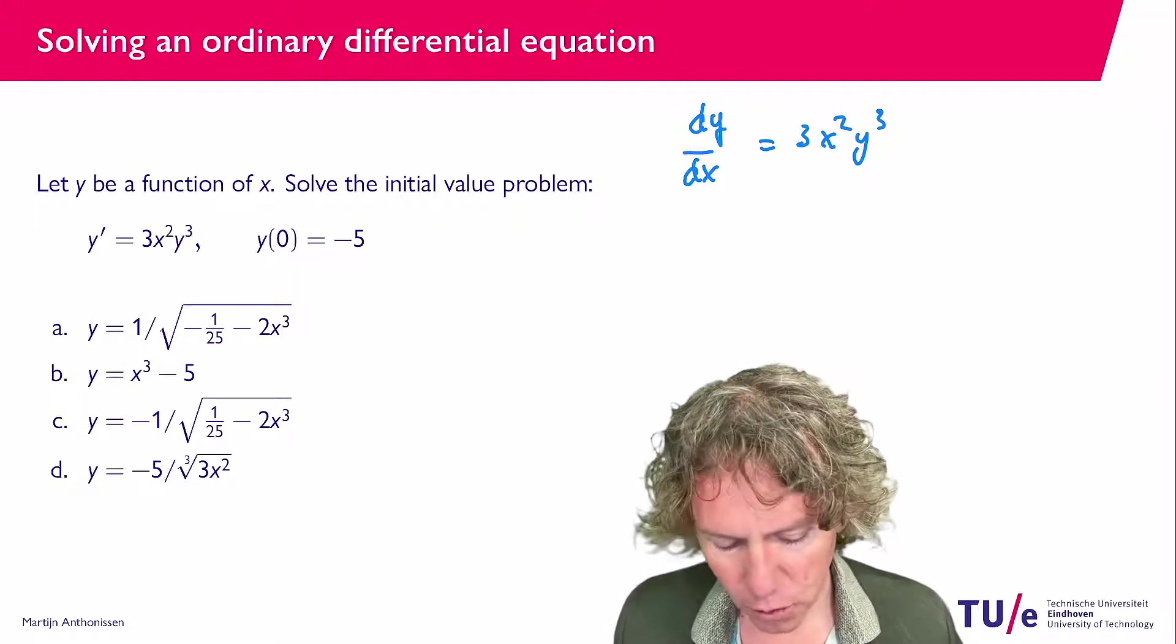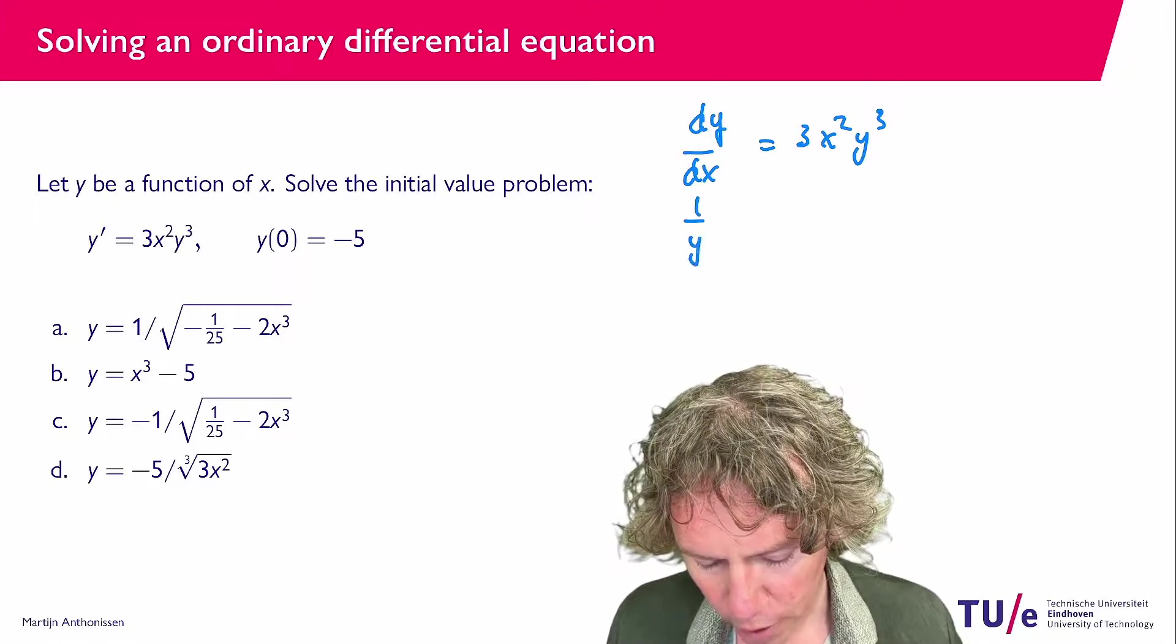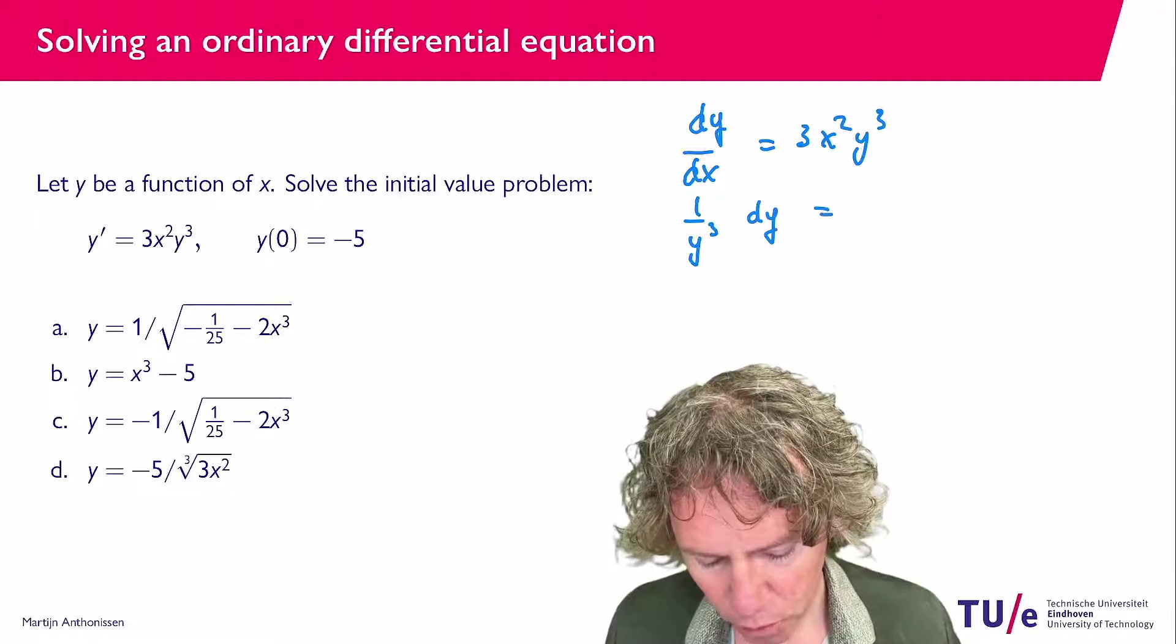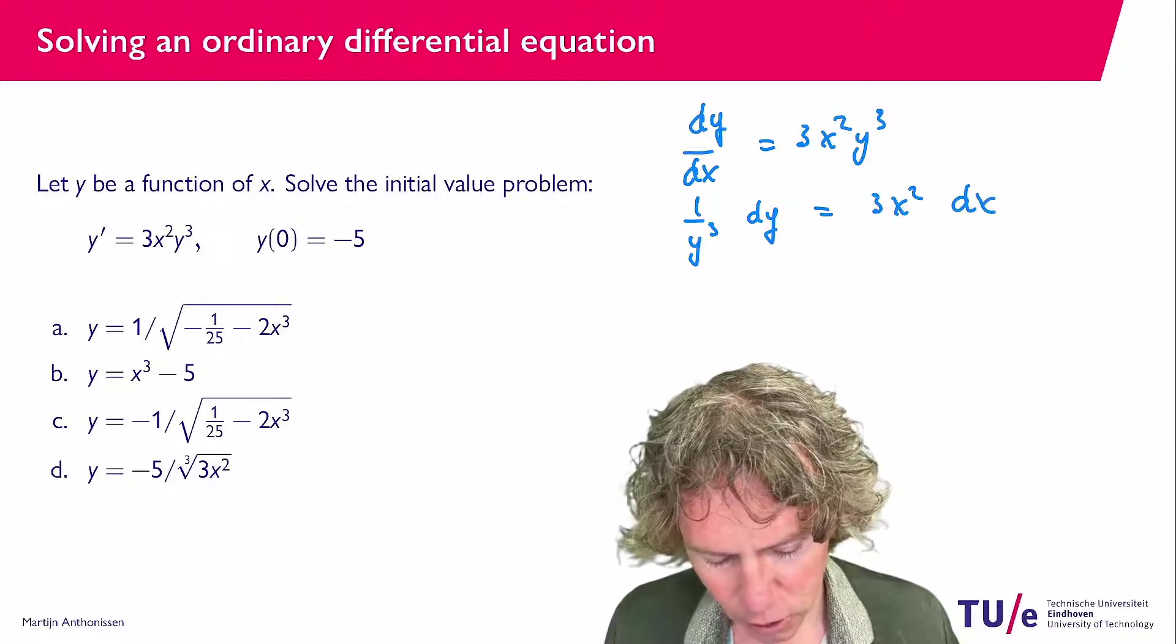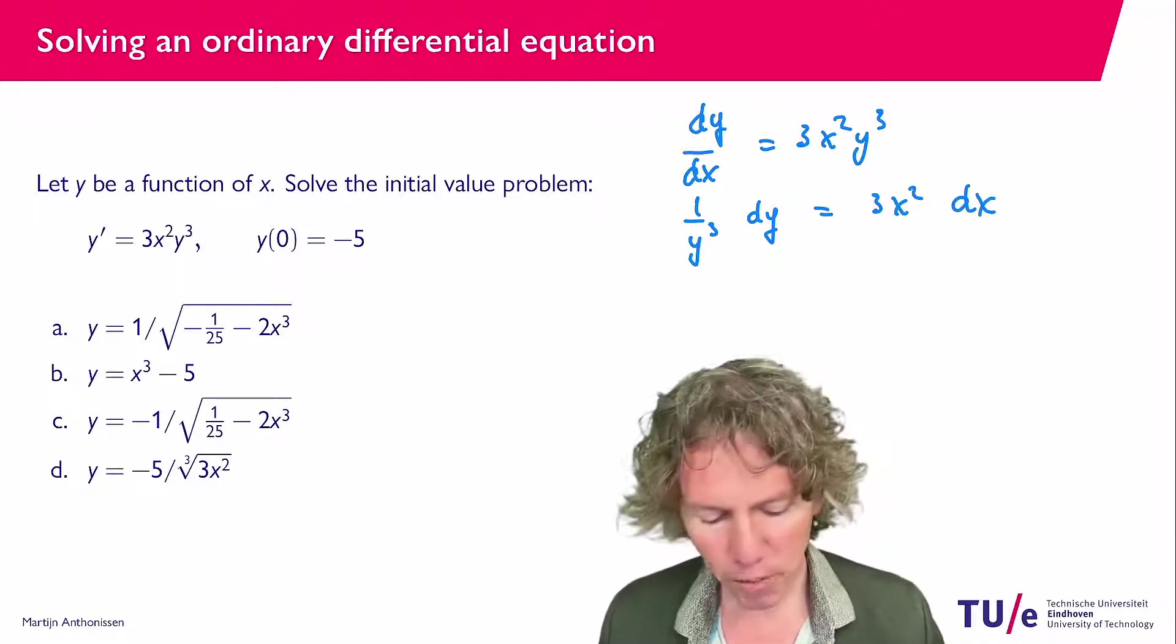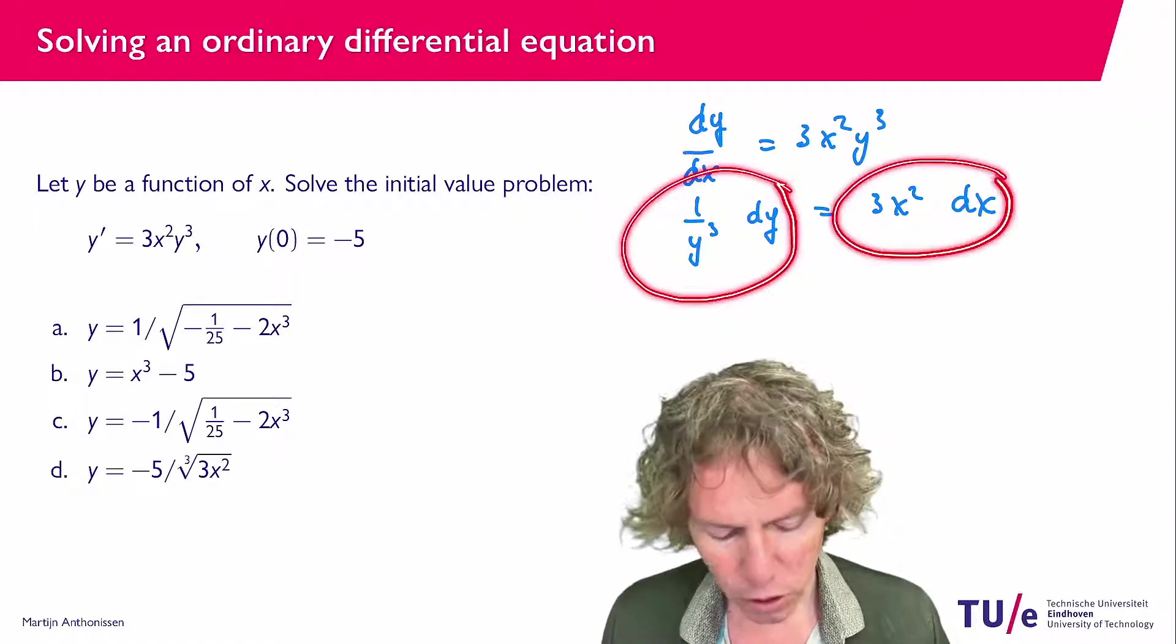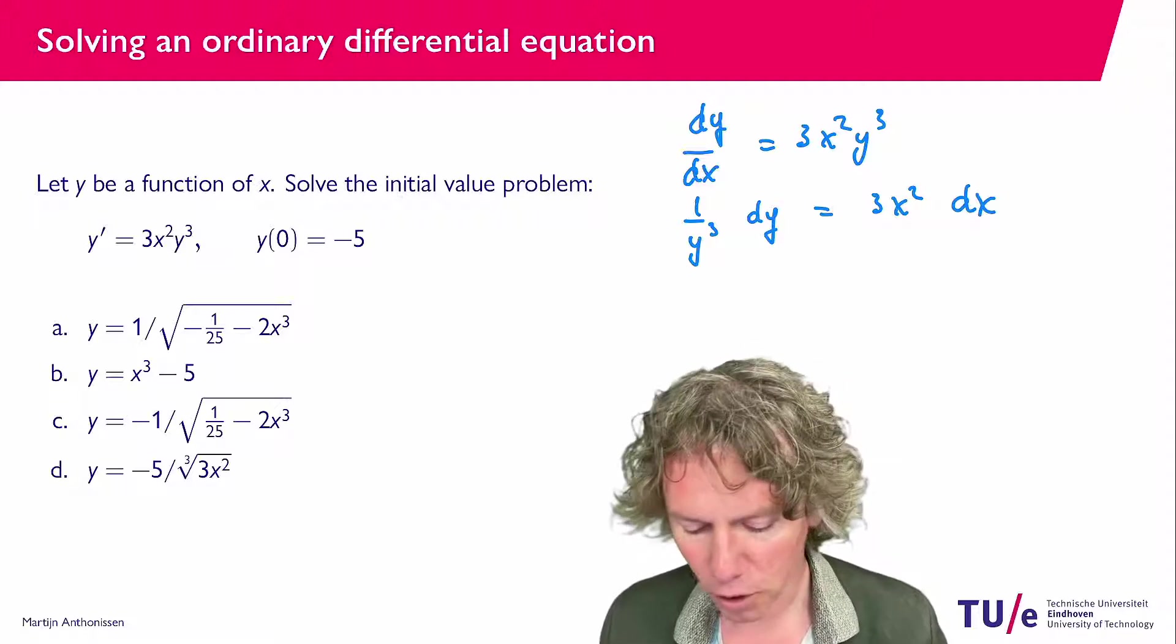So you can do that by dividing by y to the power 3, 1 over y to the power 3 dy equals 3x squared dx and as you can see we have now separated the differential equation. The left side only depends on y, the right side only depends on x, so next we integrate on both sides of the equation.